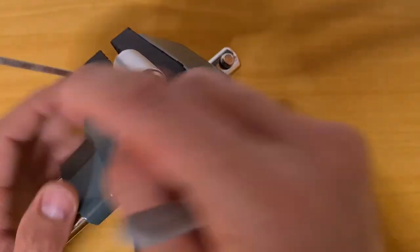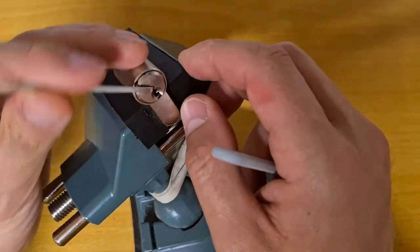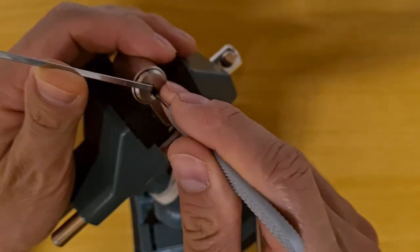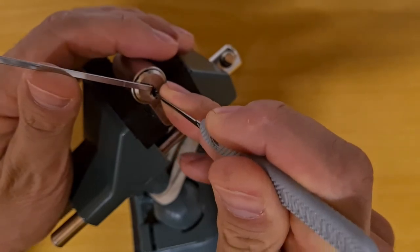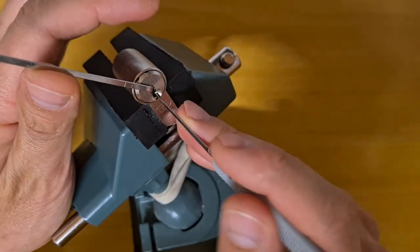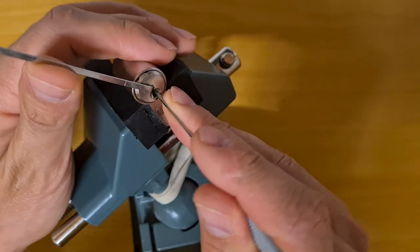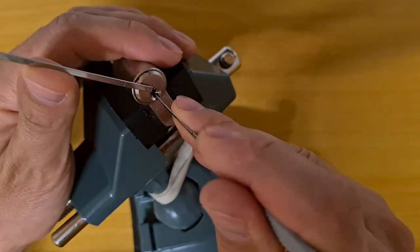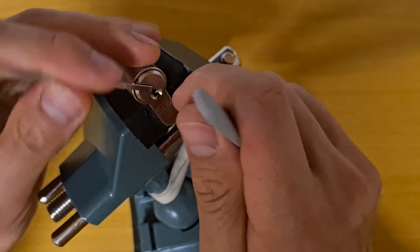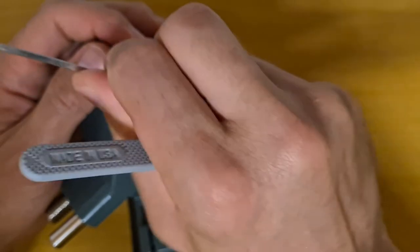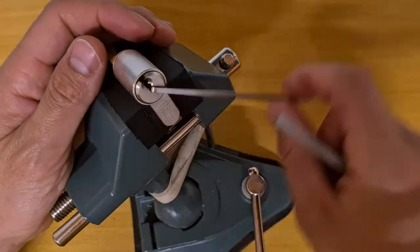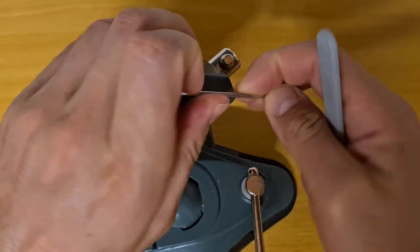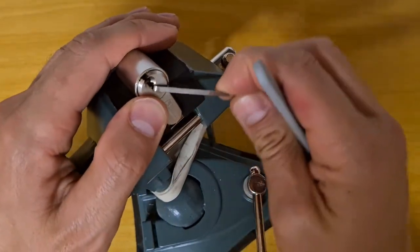Okay. I am not sure why it is going 360. Is it because the sidebar is binding on the other side? It could be. I am not sure. Well, anyways, here it is picked. Let's remove the tensioner and got it.